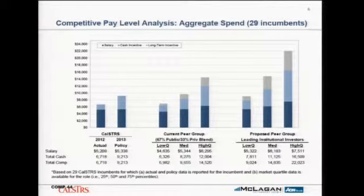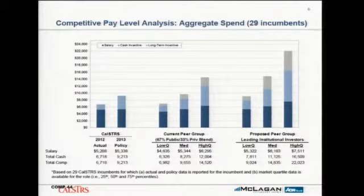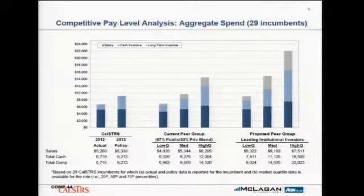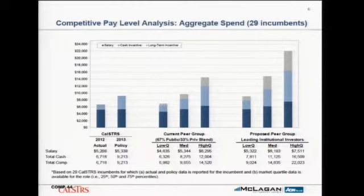The $5.3 million — your current policy salaries approximate the competitive median. If you look at your actual cash compensation, how much people actually took home last year, you were modestly above the low quartile. So as compared to what are generally much smaller public funds — and 67% of the peer group was public funds, with you as the second largest — your pay was low quartile.